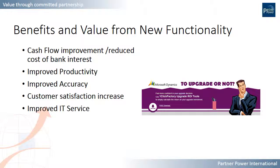While assessing the value of an upgrade project, you could translate relevant new functionality into tangible benefits. Look for cash flow improvement or reduced cost of bank interest through less inventory space, faster receivables collection, or better credit terms. Improved productivity translates well into value from savings, especially where processes and tasks are getting automated. Improved accuracy also comes from automation and reusability that reduce human error.